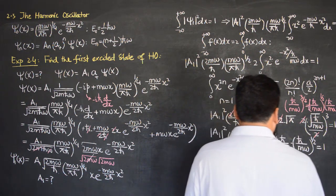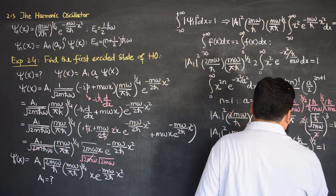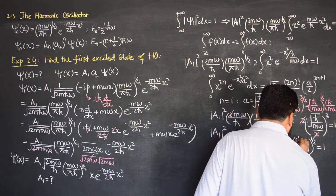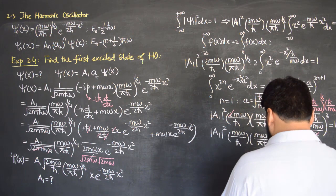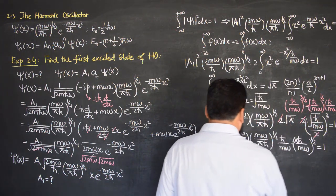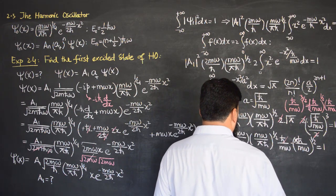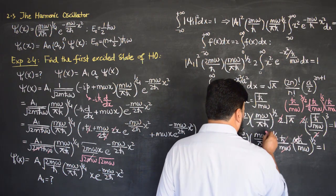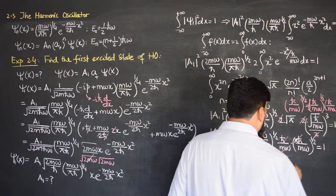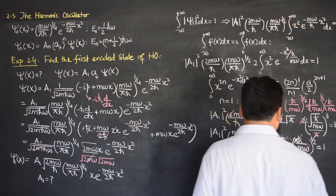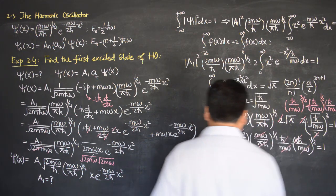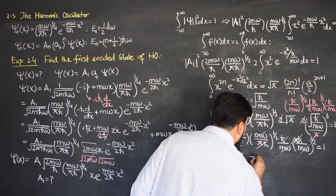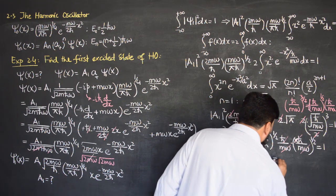Now start with the cancellation. We have π here as well, so I can write π·ℏ·ω under a square root. ℏ cancels with ℏ, mω cancels with mω, πℏ cancels with πℏ, mω cancels with mω — because both are to the 1/2 power. So all cancel and we are left with |A₁|² = 1, which implies A₁ = 1.